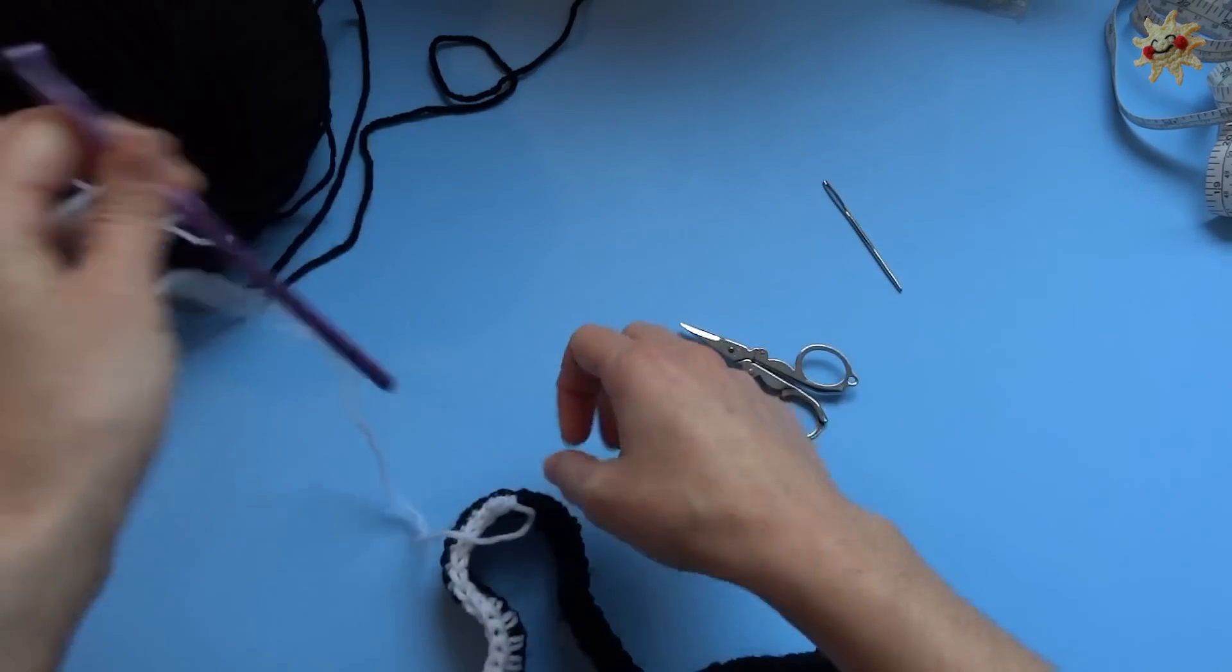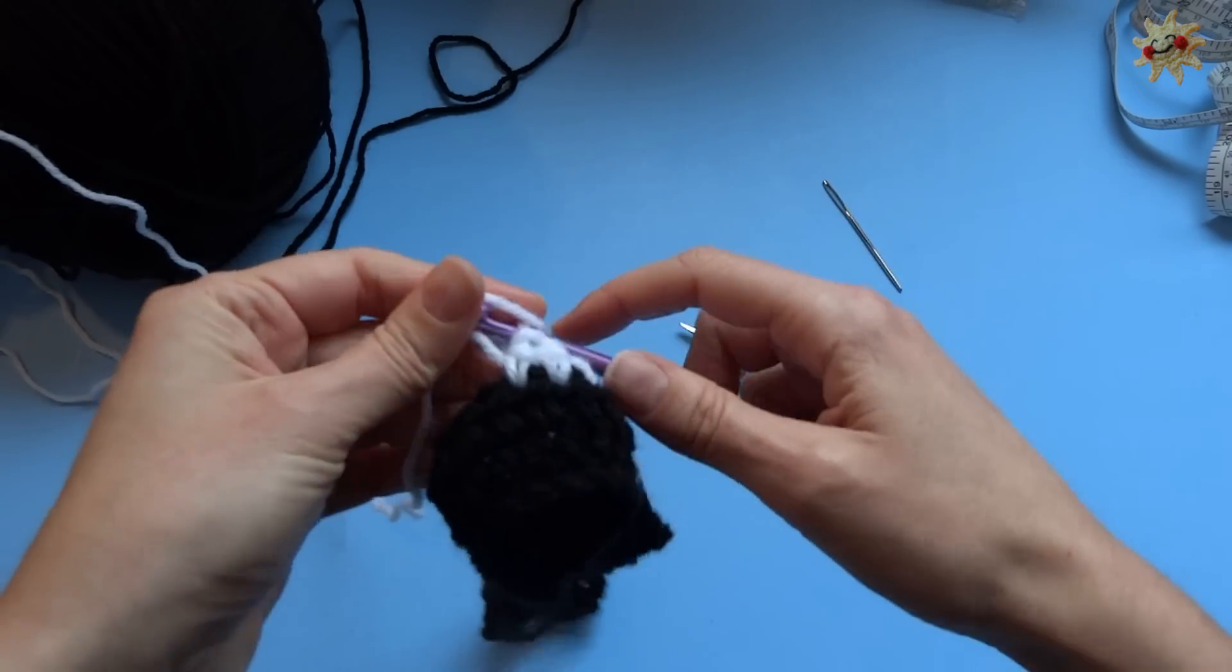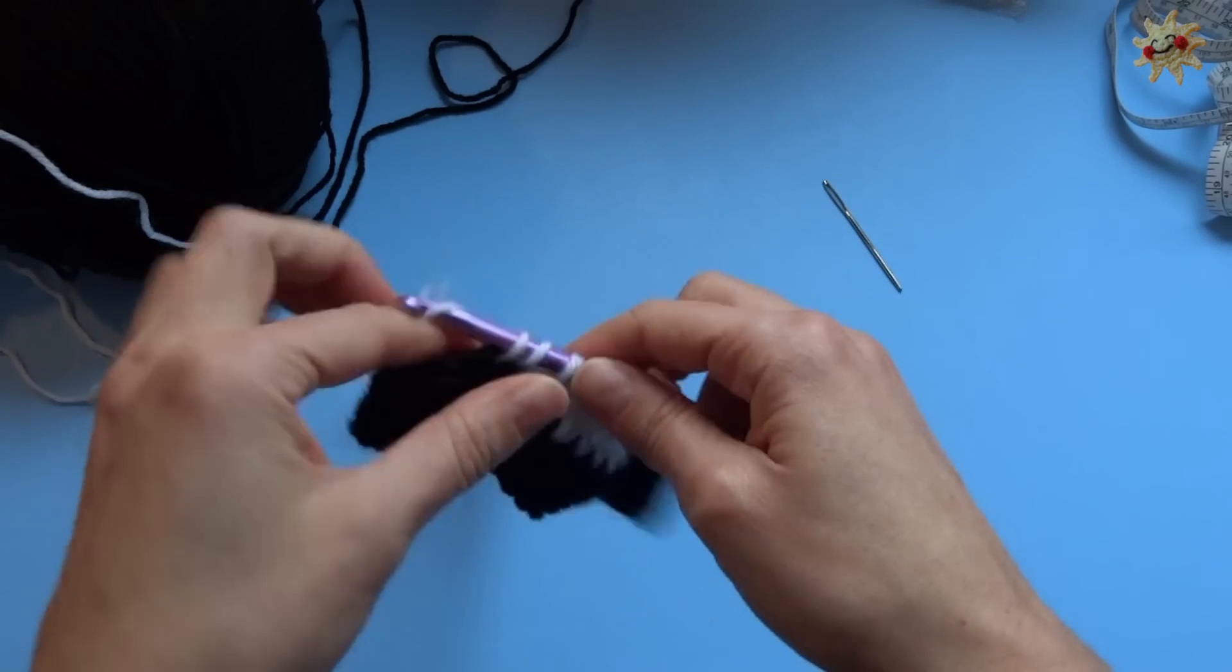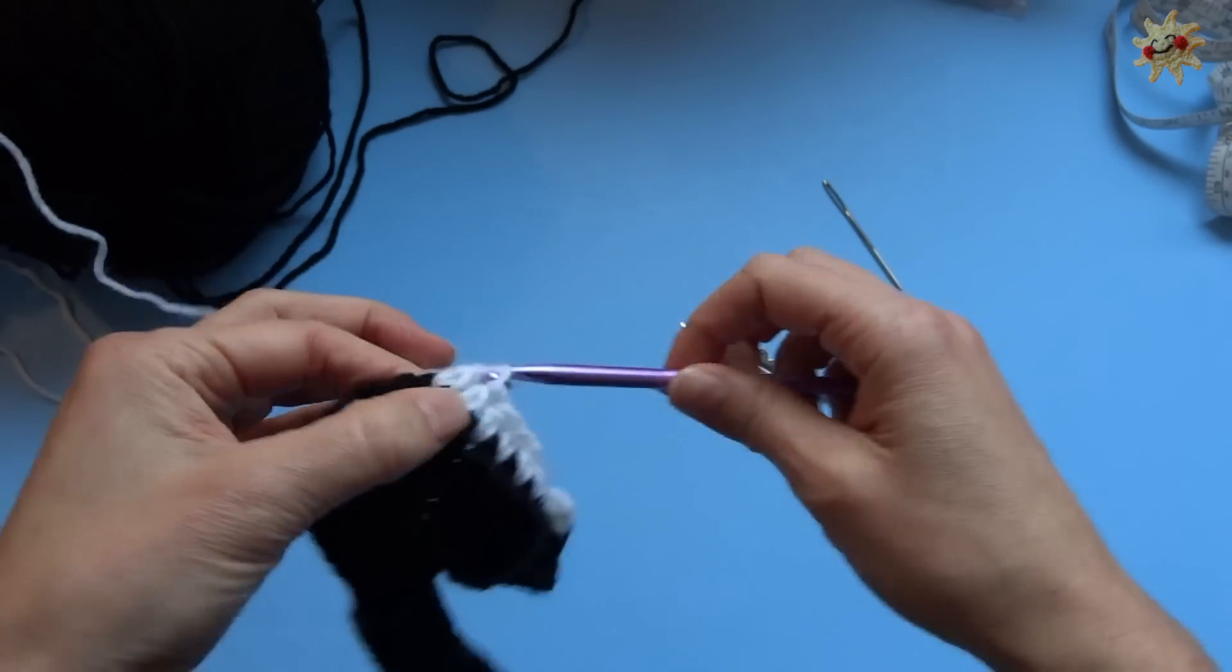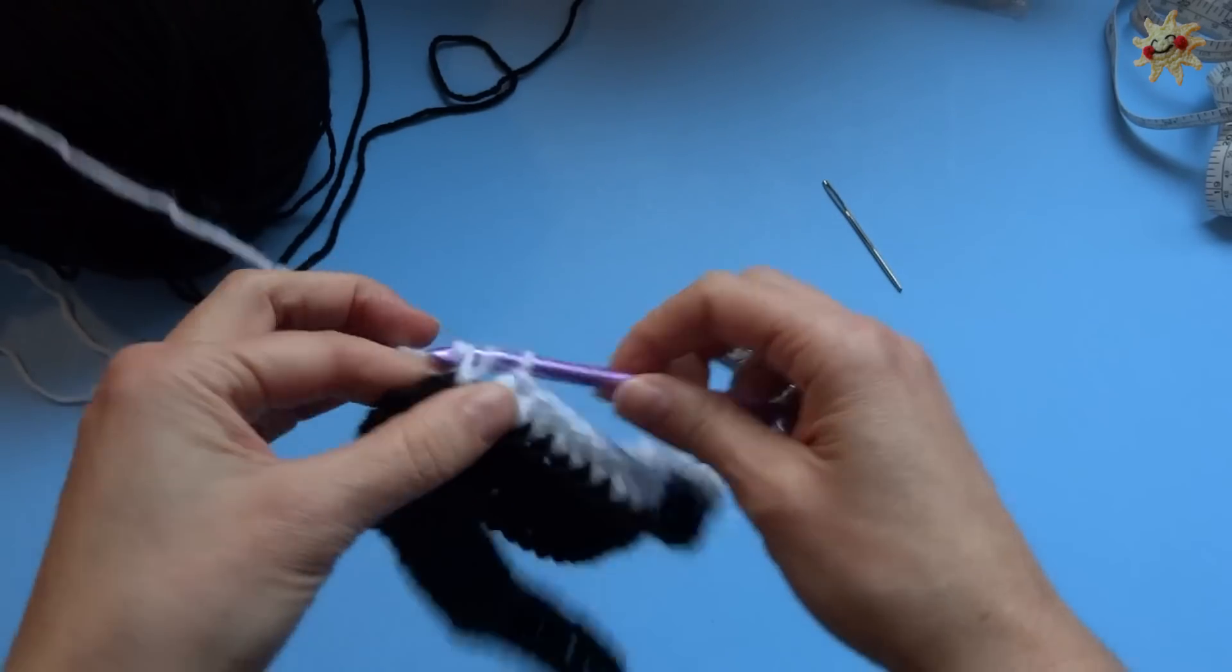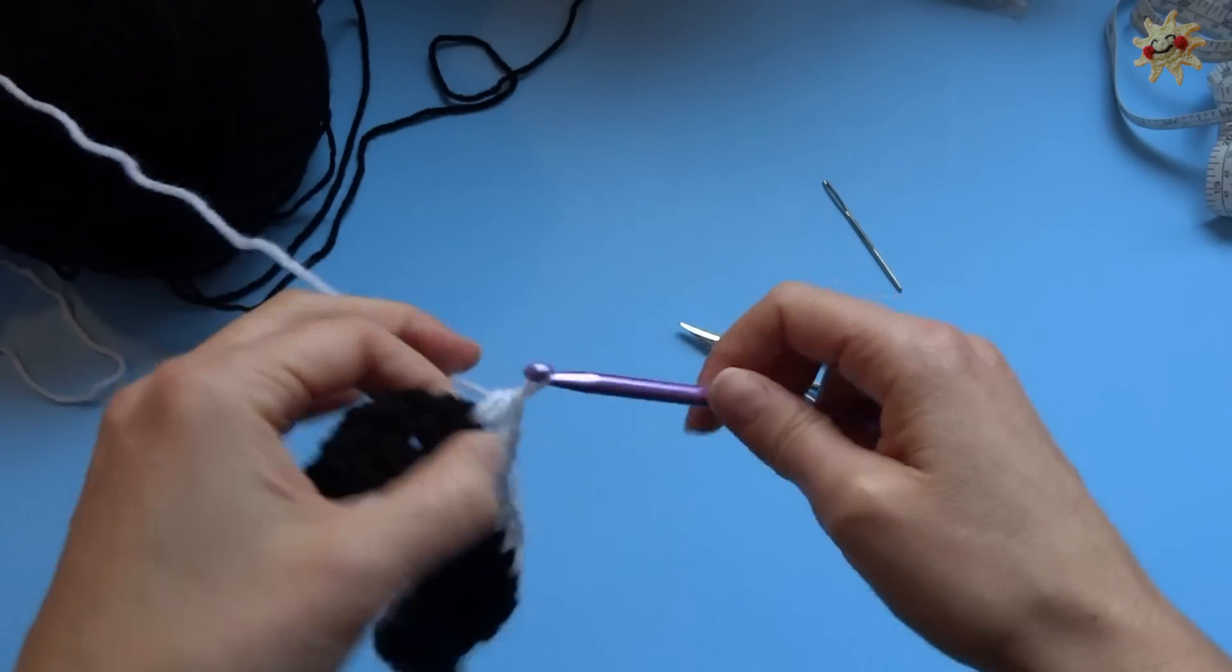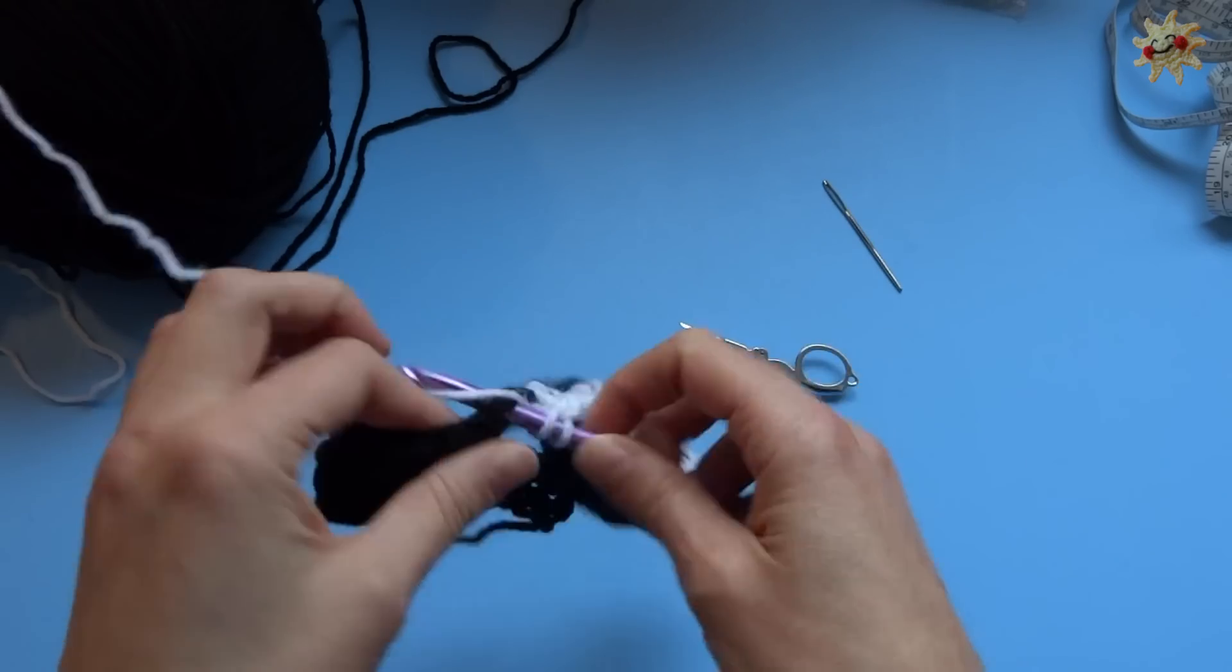So one stripe is two rows of half double crochet each color. And there, get rid of that. And at the end of every two rows of half double crochet, you can snip your yarn and then change colors. And you're going to keep adding stripes until you feel it's wide enough to check around your leg.